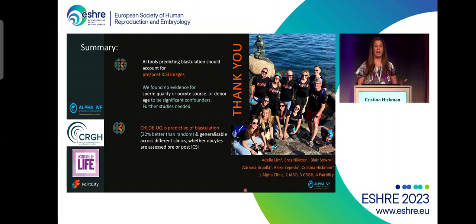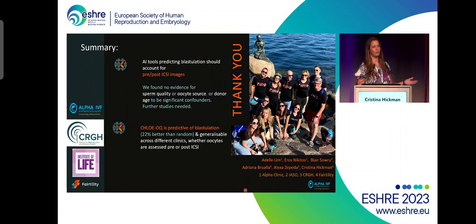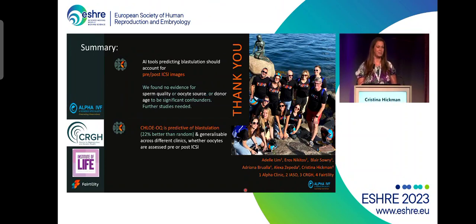We found no evidence for sperm quality, oocyte source, or donor age to be considered as confounders, but this could be the case for this particular algorithm as these were considered when the algorithm was built. We need to do further studies on other algorithms available in the market. CHLOE-OQ is predictive of blastulation and improves over random by 22% our ability to assess whether an oocyte will become a blastocyst, and we were able to demonstrate this in different clinics in different geographies. I'd like to thank Institute of Life in Greece, CRGH in the UK, and Alpha in Malaysia for leading this study, and also the fertility team who made this study possible. Thank you very much.